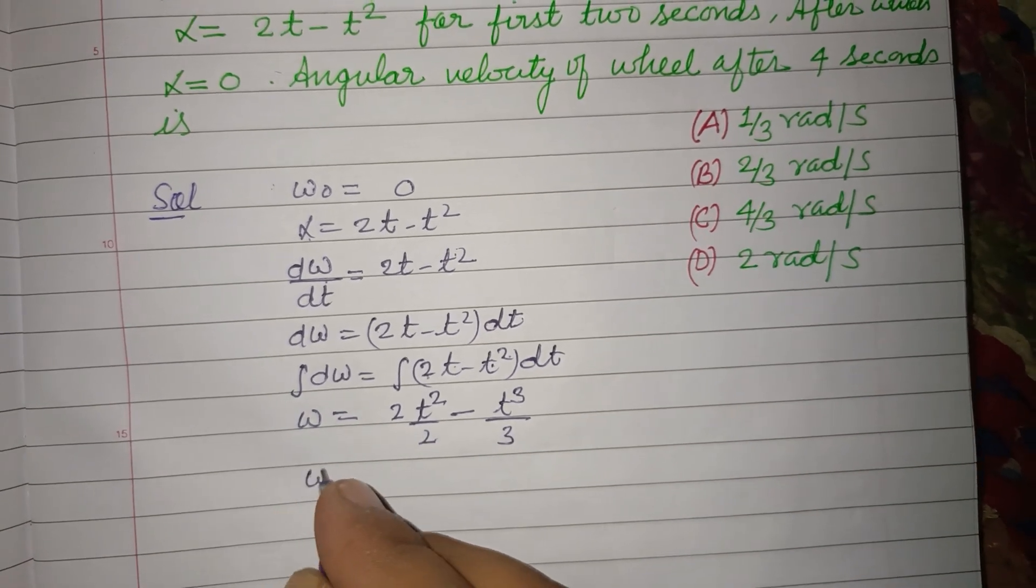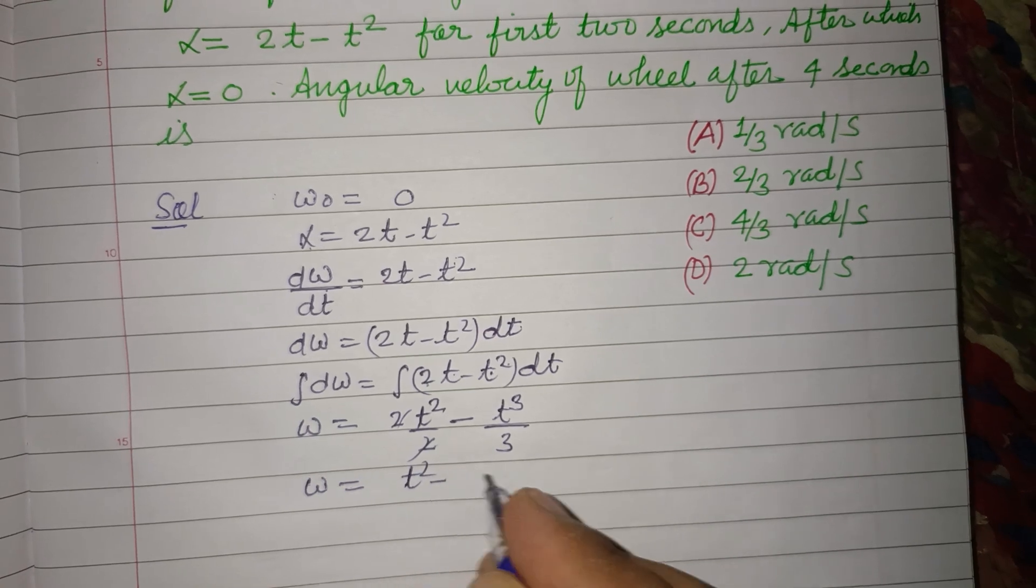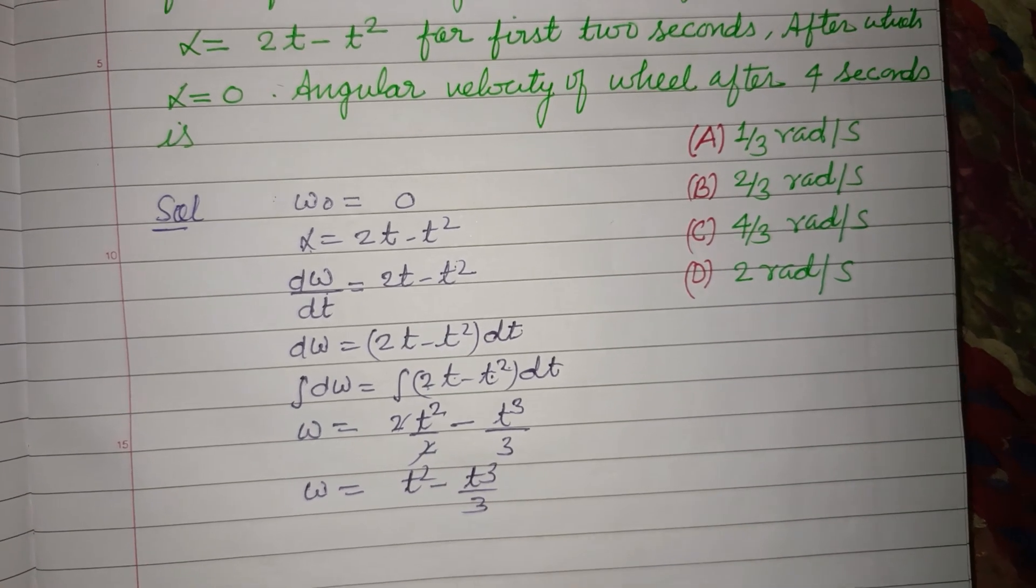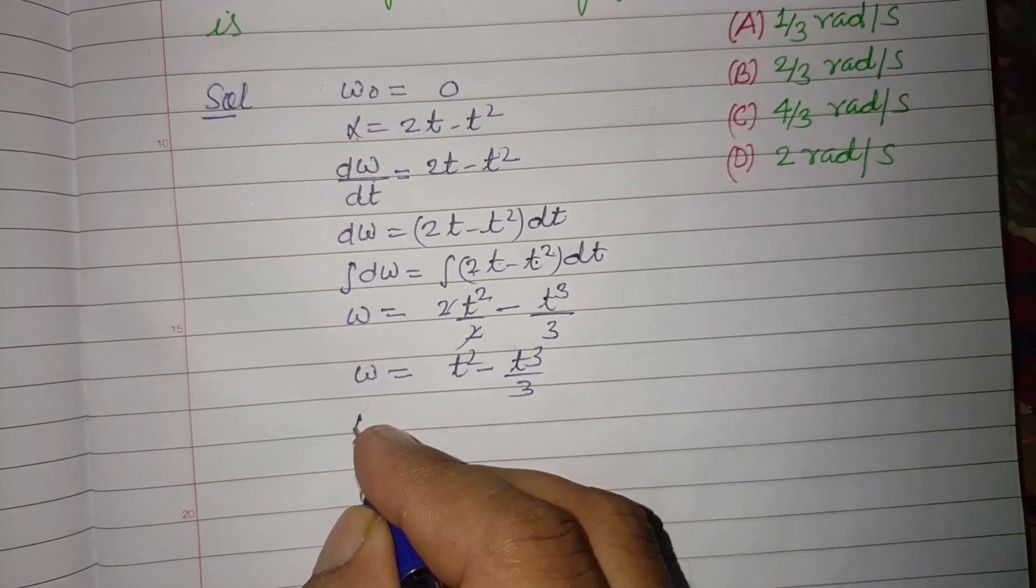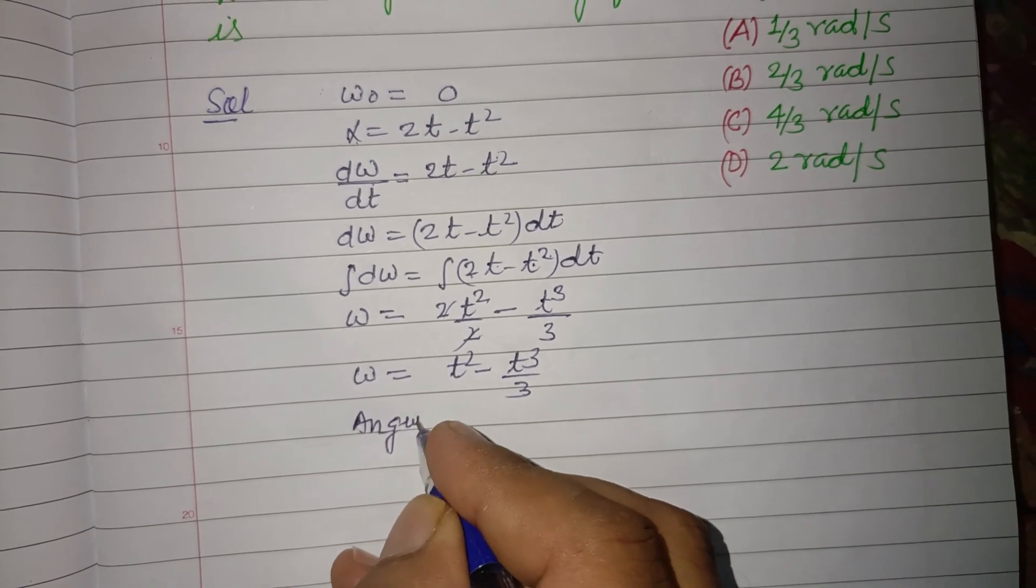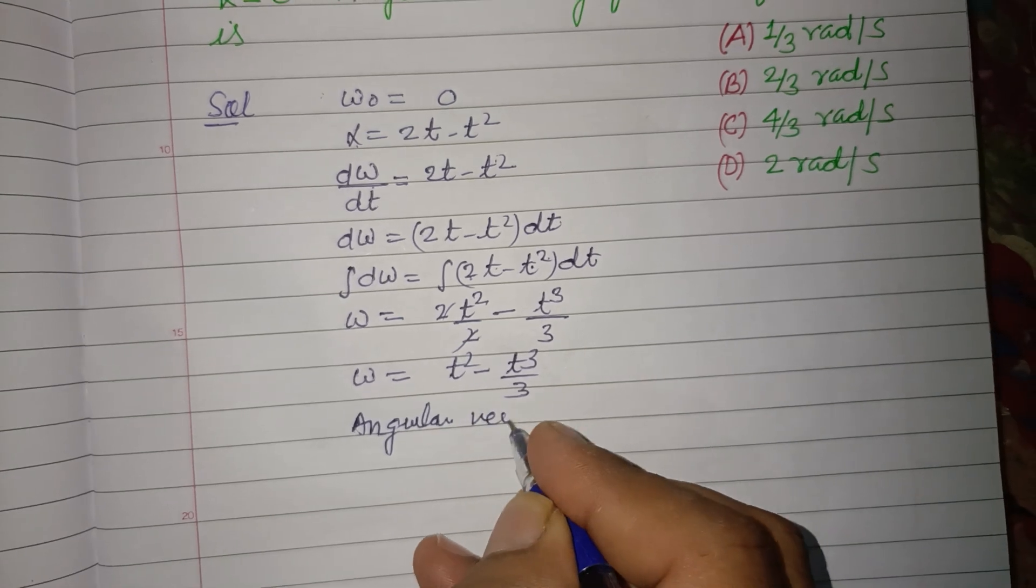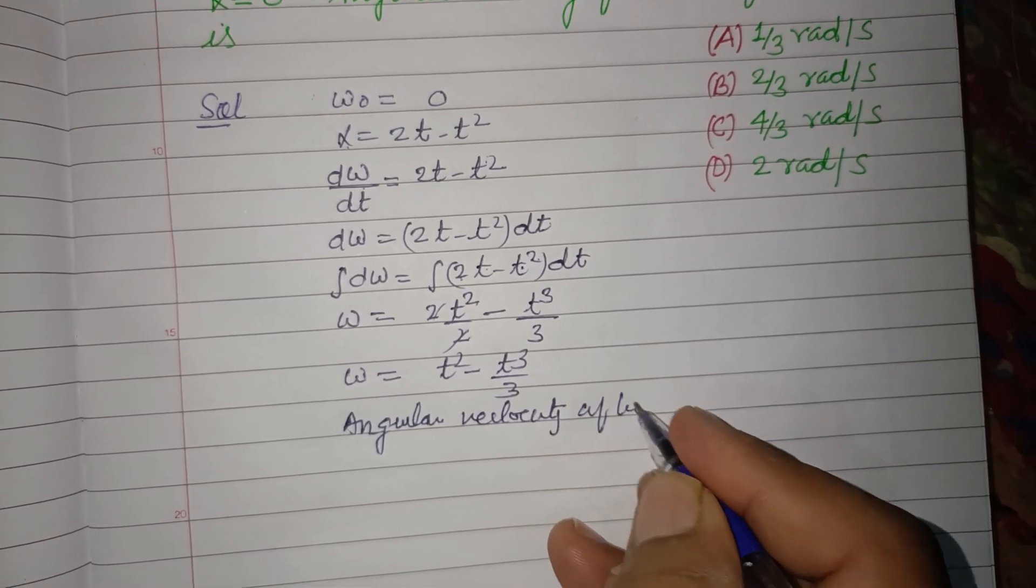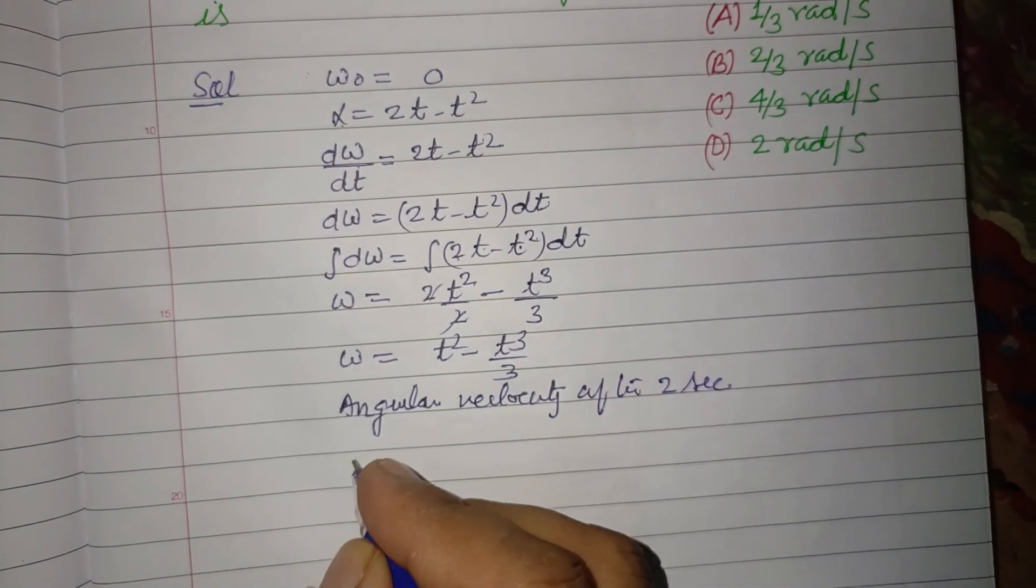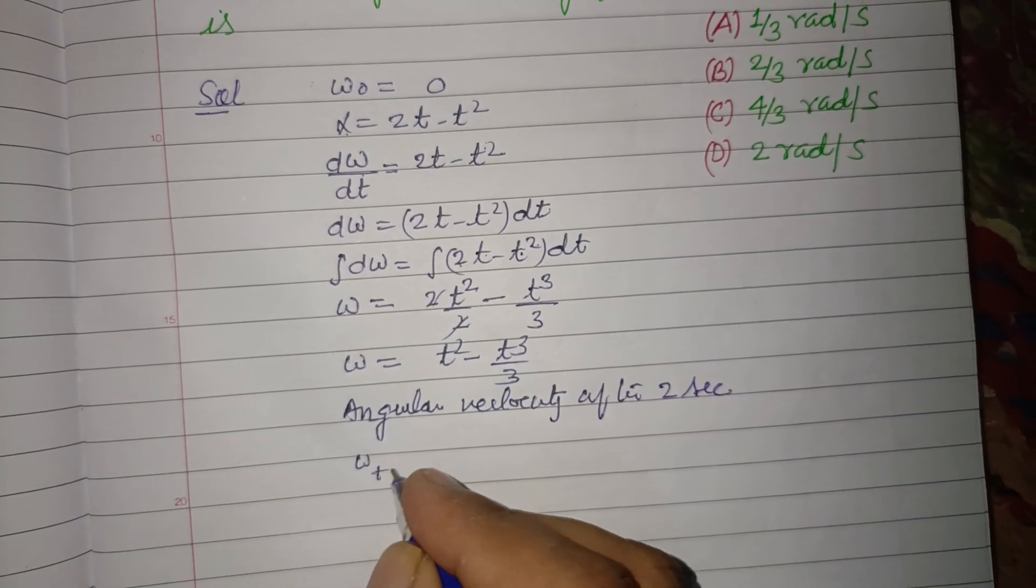So ω = t² - t³/3. After 2 seconds, to find angular velocity, we put t = 2 in this.